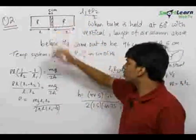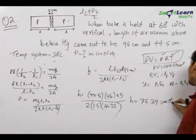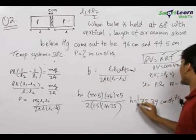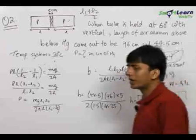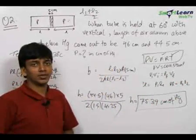Therefore the final answer for the initial pressure in this column of the tube comes out to be equal to 75.39 centimeters of mercury, that is a pressure equivalent to the pressure of a column of mercury of height 75.39 centimeters.